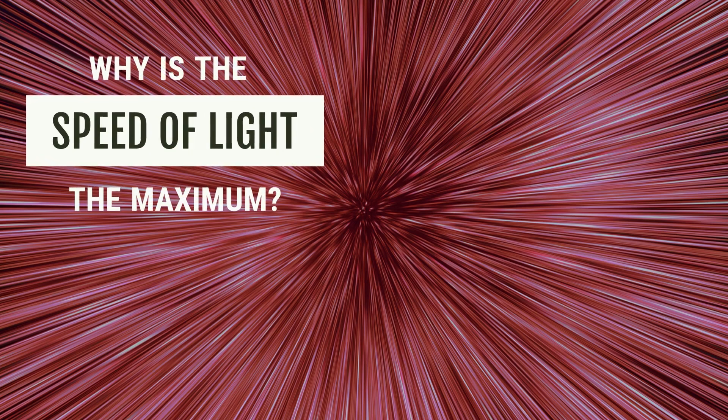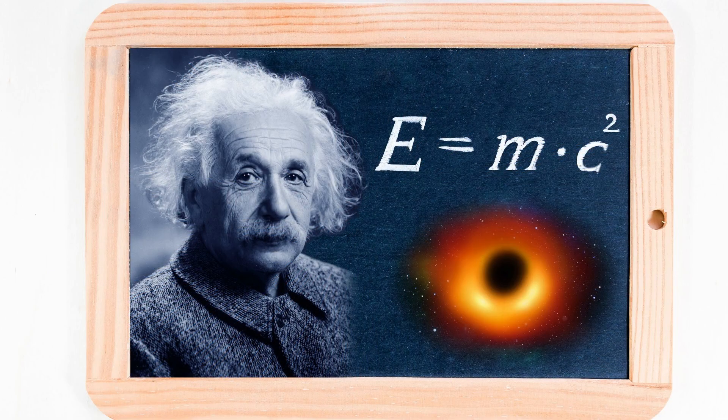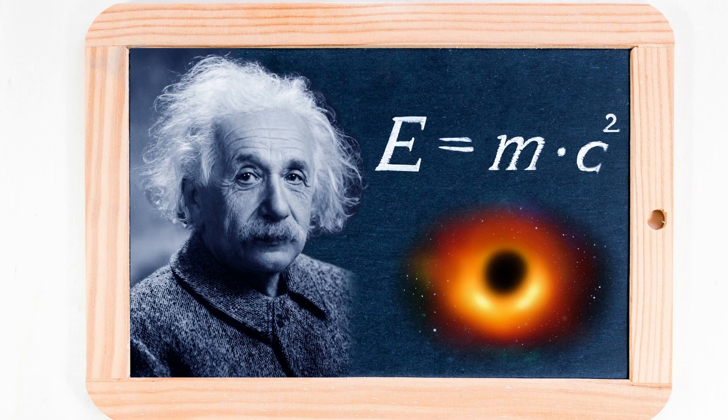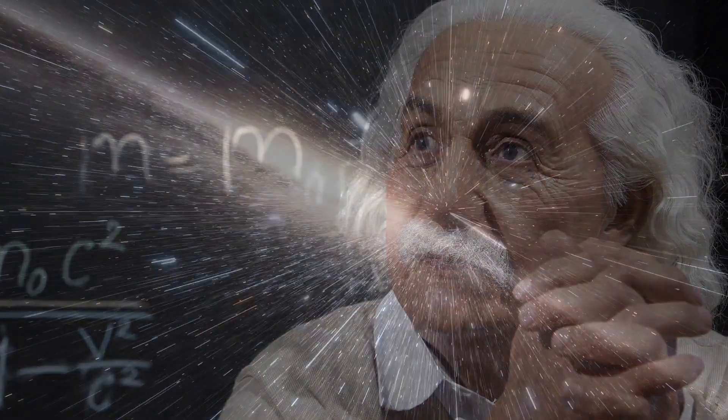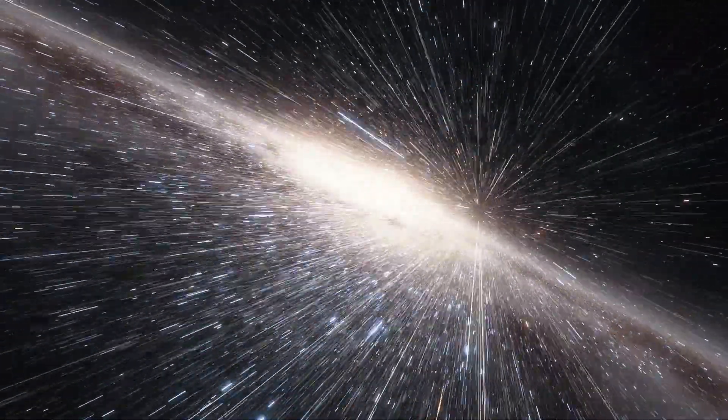Why is the speed of light the maximum? According to Einstein's theory of relativity, the speed of light is the ultimate speed limit in the universe. This means that nothing can travel faster than the speed of light. There are several reasons why this is the case.